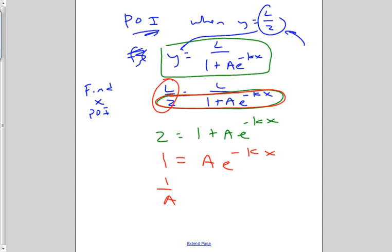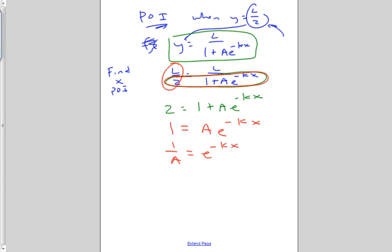Solving for x, divide by A. Now we're going to take the natural log. And then solve for x. So we've got x equals ln of 1 over A over negative k. And that should look very familiar to the solution we got before with actual real numbers.